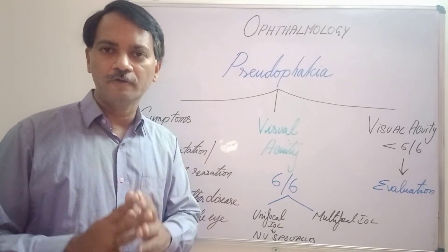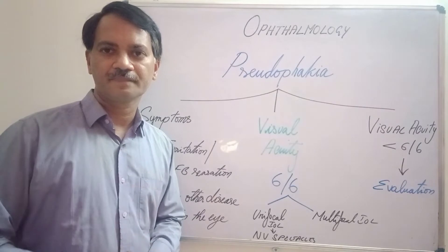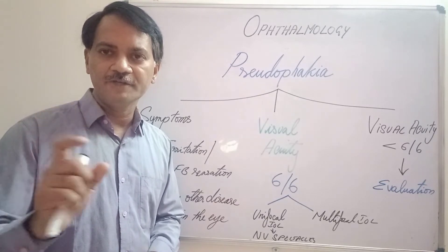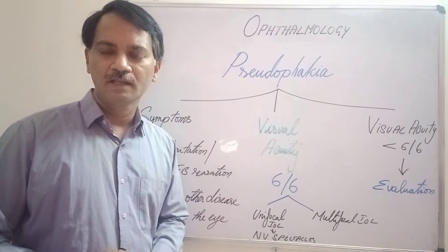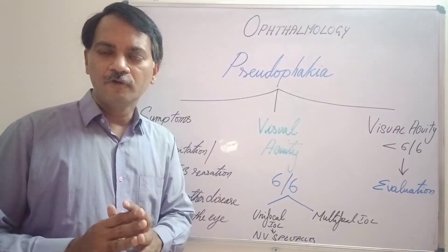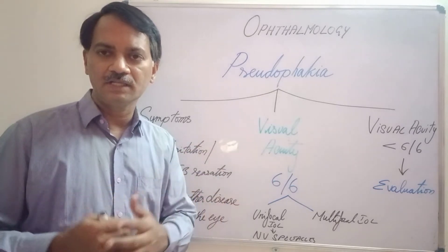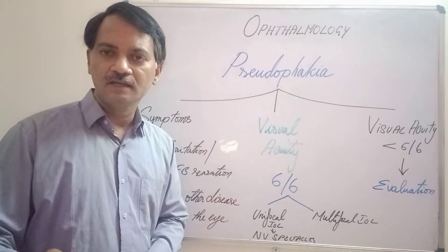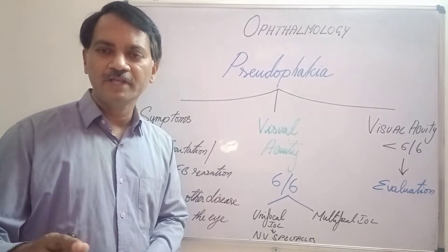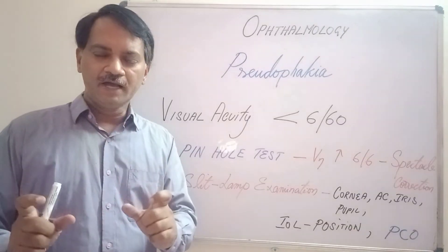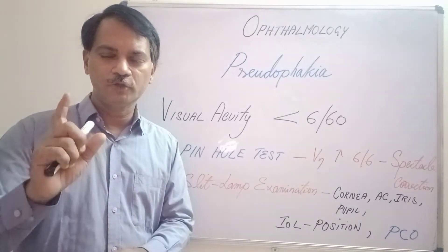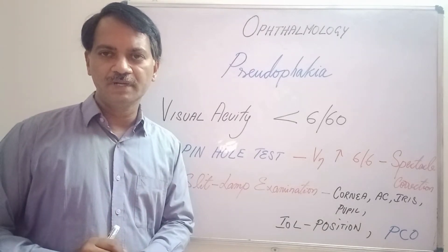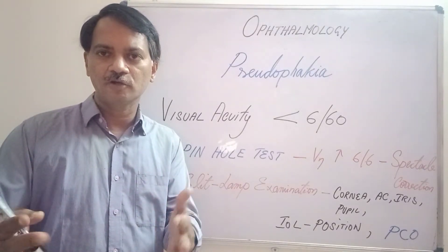If the patient is having a visual acuity of less than 6/6 — in the previous video the patient had a visual acuity of only 6/60 — we don't expect such low vision for the patient to do normal activities. So we have to find out the reason for this reduced vision and try to correct it. If a pseudophakic patient has a visual acuity of less than 6/6, it is the ophthalmologist's responsibility to correct it to the normal vision of 6/6.